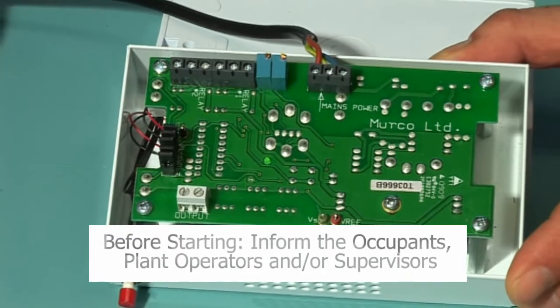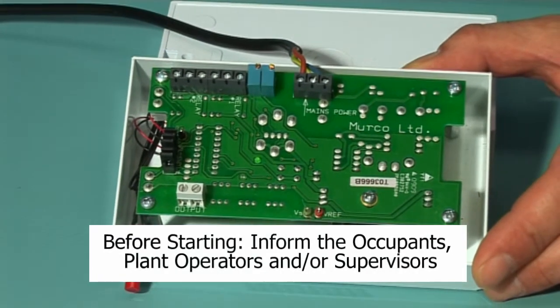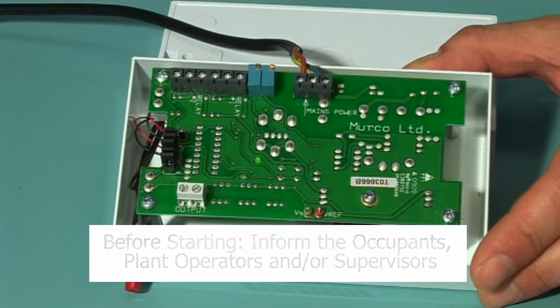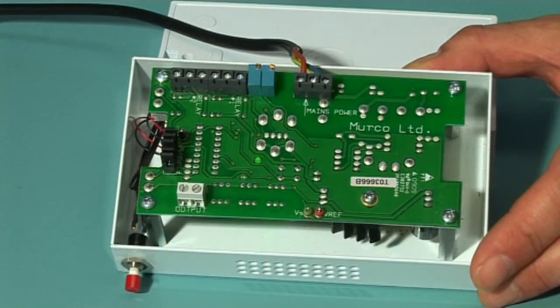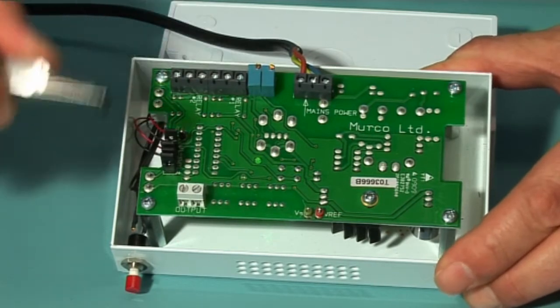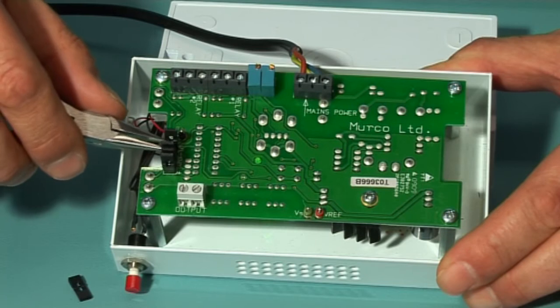Before starting, inform the occupants, plant operators and supervisors of the test. Check IAM connections to external equipment and disconnect if required. Deactivate any delays by removing jumpers one and two on HD1. Before performing your test, the IAM must be powered up overnight.